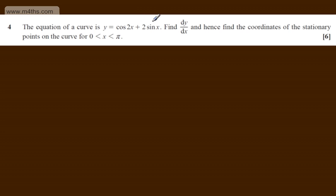In question number 4, we're told the equation of the curve is y = cos2x + 2sinx. We're asked to find dy/dx and hence find the coordinates of the stationary points on the curve for x between 0 and π. The question carries 6 marks.